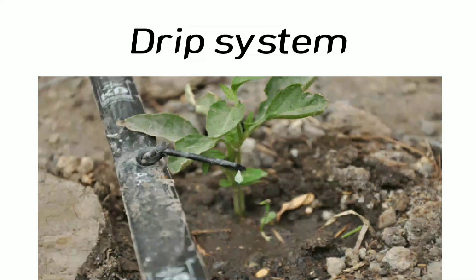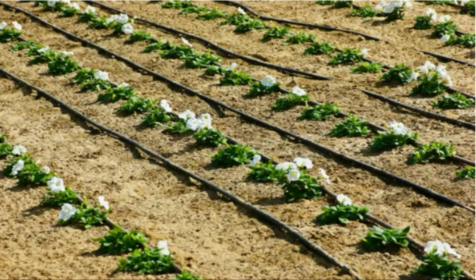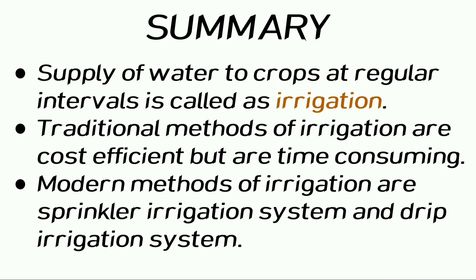In drip irrigation, the water falls drop by drop directly near the roots, so it is called the drip system. Water is not at all wasted in the drip system, and it is a boon in the regions where availability of water is very poor.